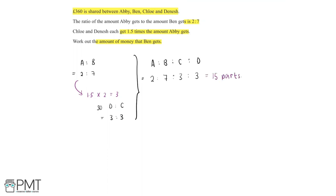Since we're told that £360 is shared between the four people, we know that 15 parts equal £360. We want to find how much one part is worth, so we divide both sides by 15. 360 divided by 15 is equal to 24, so one part is equal to £24.